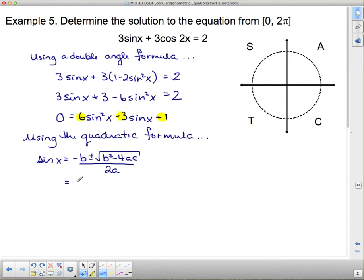And negative of -3 is positive 3. Plus or minus the square root of -3 squared is 9. Minus 4 times 6 times -1. Be careful with your negatives. People screwed up right around there. 2 times our a value is 6.